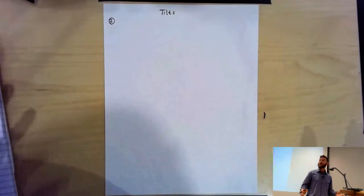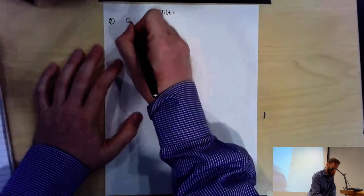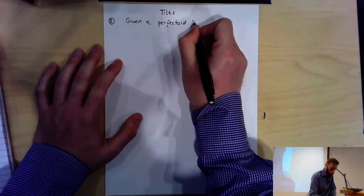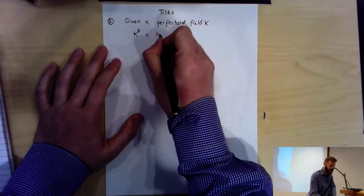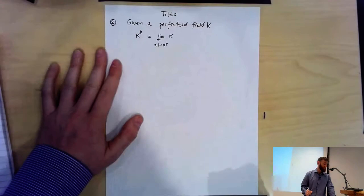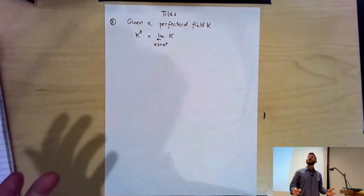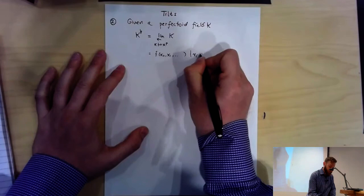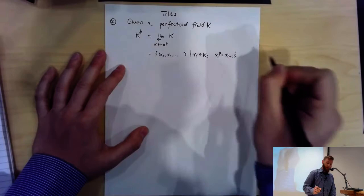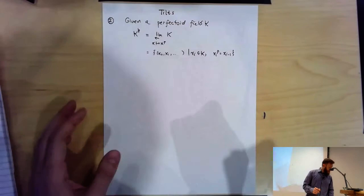Given a perfectoid field K, what we do is create a new field K-tilt. A priori, it's going to be a set — specifically the inverse limit along K where the transition map is X goes to X to the power of P. We get a multiplicative monoid. Explicitly, this is a set of sequences (X_0, X_1, ...) where each X_i is an element of K and each is a P-th power of the one that came before it.